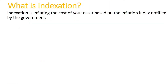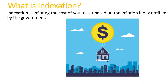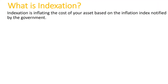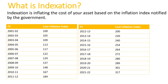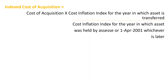As promised, we are going to explain the concept of indexation. Indexation is basically inflating the cost you paid for the capital asset in order to account for rising prices. The table below shows the indexation factors — the Cost Inflation Index (CII) — as notified by the government for all years starting 1st April 2001. To calculate the indexed cost of acquisition, take your original cost of acquisition and multiply it with the CII of the sale year, then divide it by the CII of the year the asset was purchased or the CII of 1st April 2001, whichever is later.